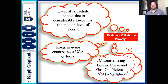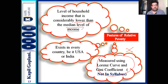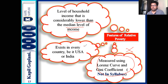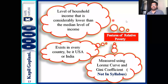In developing nations, both relative and absolute poverty can be seen; in underdeveloped nations also, both can be seen. The last feature of relative poverty is that it is measured using the Lorenz curve or Gini coefficient. These are not in your current syllabus but you may have studied the Lorenz curve in class 11. The median level of income differs from country to country, so relative poverty measures will be different for each country.